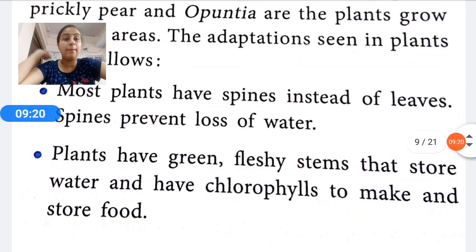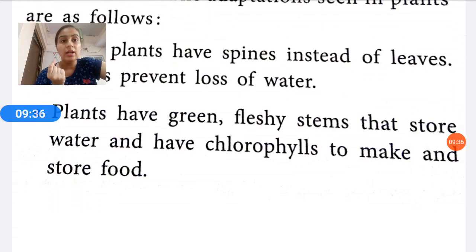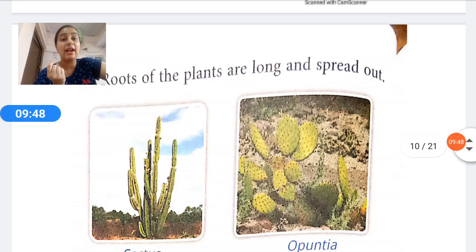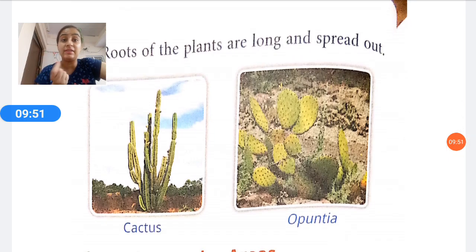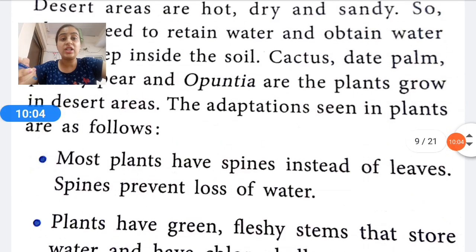Desert plants have green, fleshy stems that store water and contain chlorophyll to make and store food. Chlorophyll is the substance required to make food. The roots of desert plants are long and spread out over a huge area to absorb water from deep in the soil. These are the special adaptations of plants in desert areas.